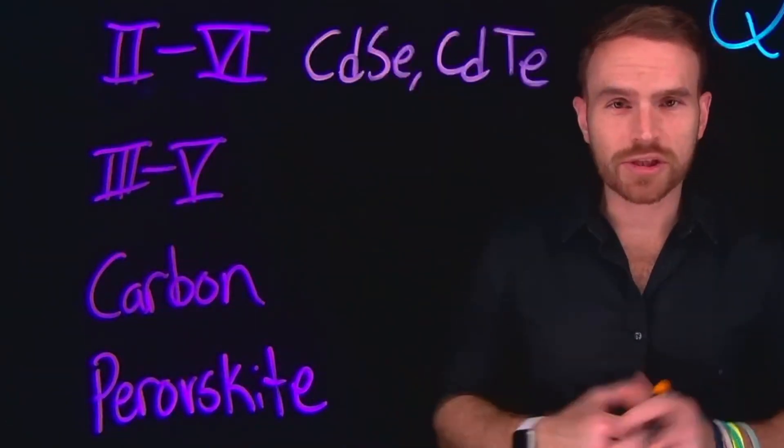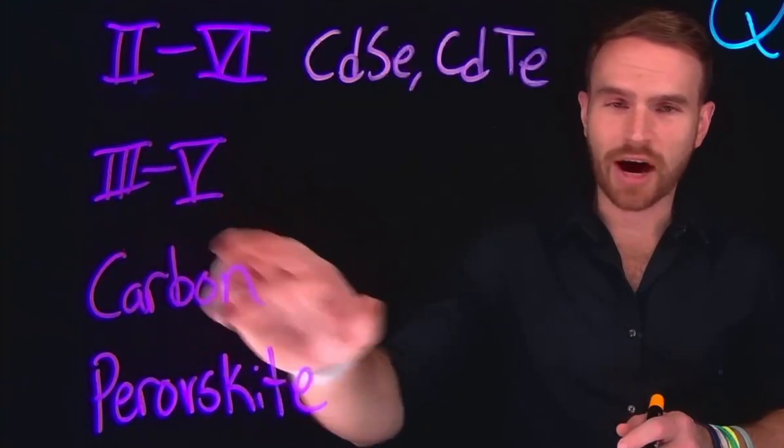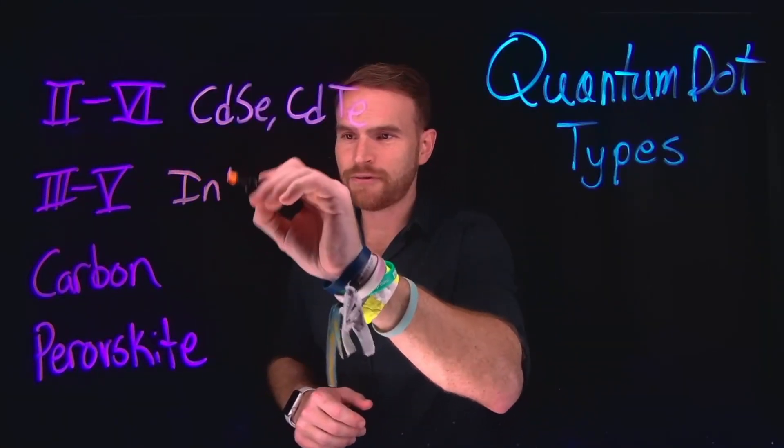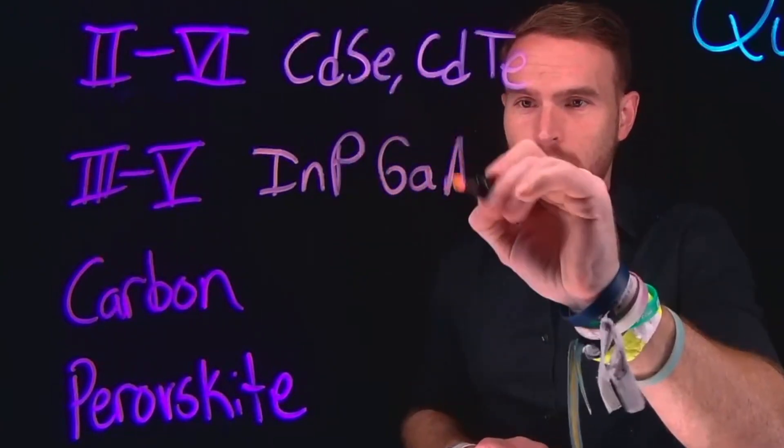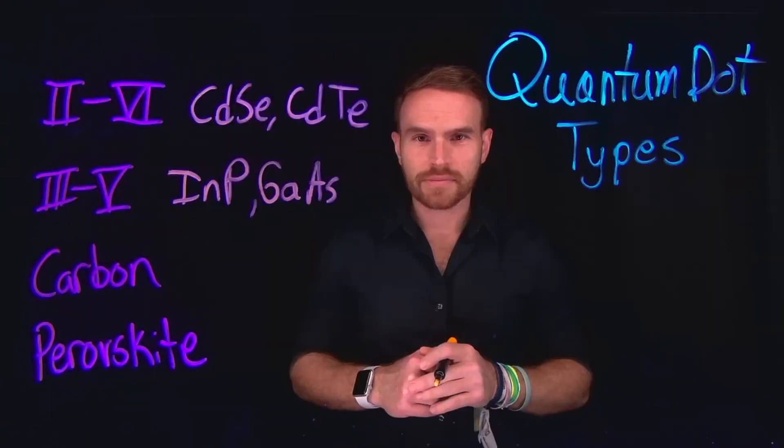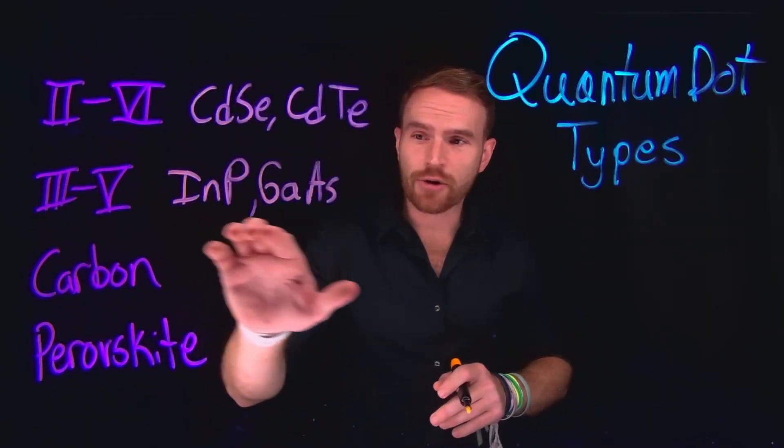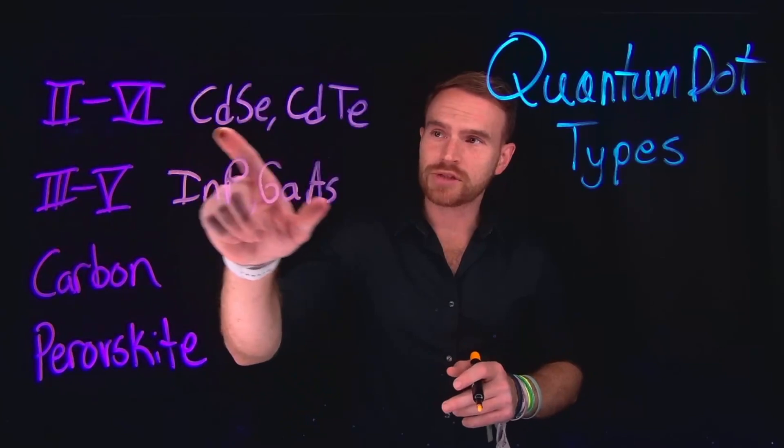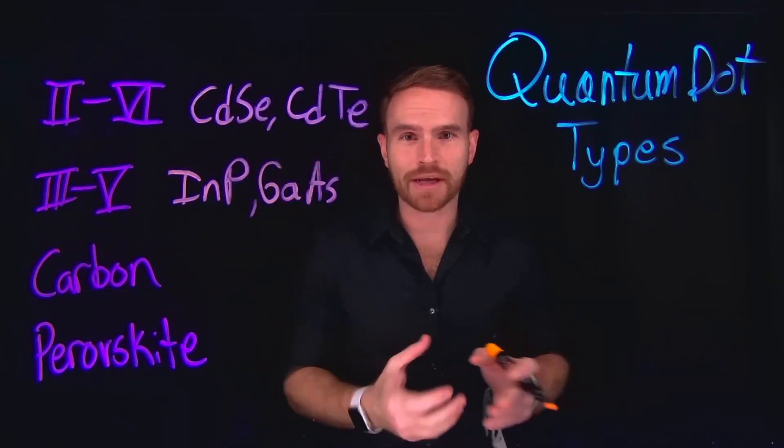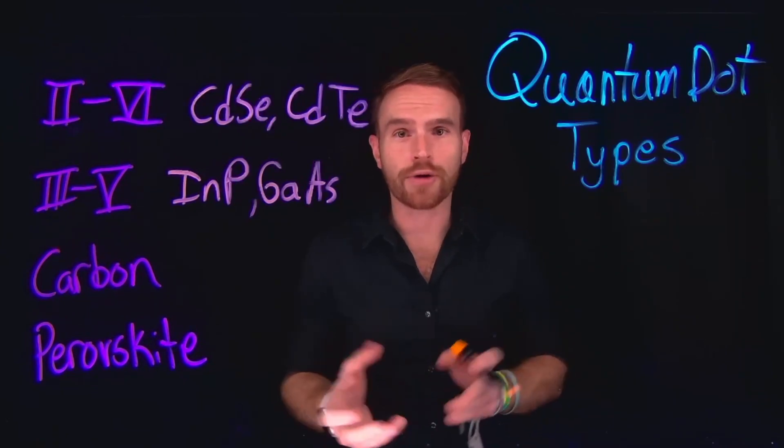3-5 quantum dots are typically made up from the groups 3 and 5 on the periodic table. Common examples of these are going to be things like indium phosphide and gallium arsenide, are probably the two most common examples of these 3-5 group types of quantum dots. These are considered generally more environmentally safe because they are not using cadmium as a part of the quantum dot and therefore you see these applications typically for things that require environmental work.